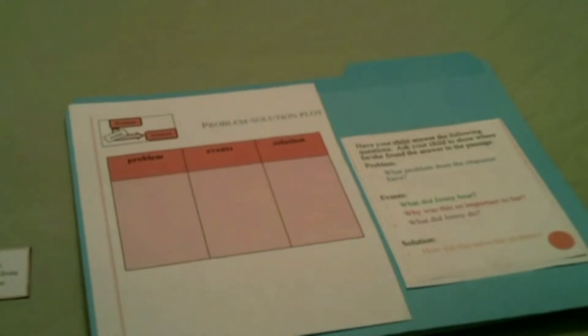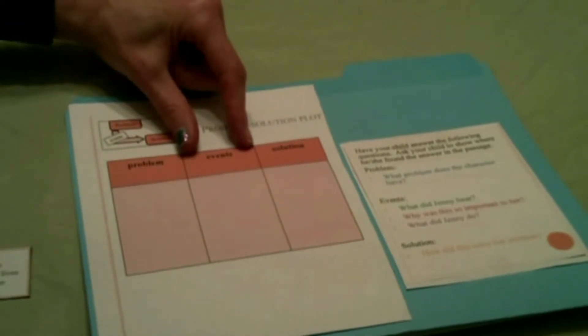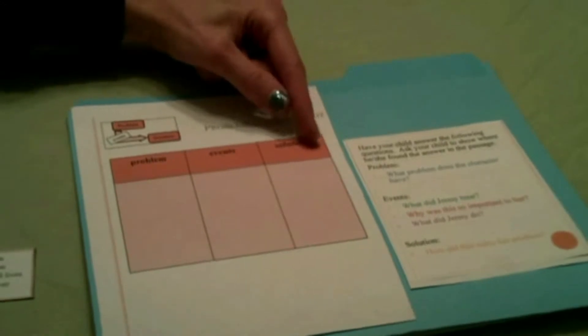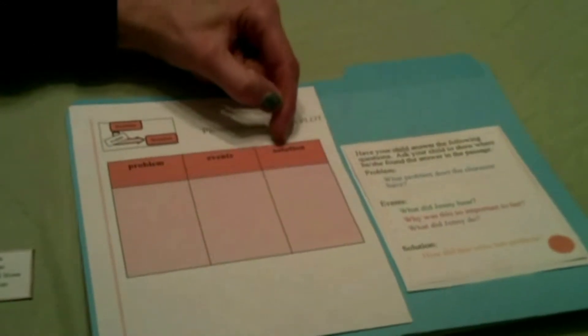Today we're working with problem and solution in stories, and that just helps us understand the story that we're reading better. So let's go back to a story that we have read over and over again — the story of Cinderella. That's going to help us practice how to organize the information in the story: what the problem was, the events, and then the solution.